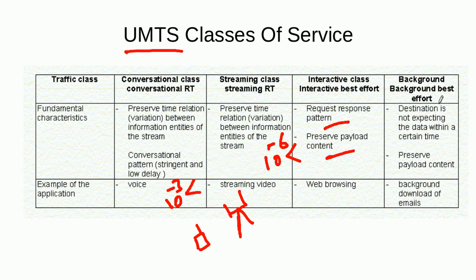Then we have the background class. For example, downloading a file or sending and receiving an email. In that case, it is not important whether packets come with the same delay or variable delay. Even if some packets arrive much earlier and some with a bit of delay, it does not matter, because what is important is that we receive the entire message. That is why I call it background best effort, because these services can run in the background.